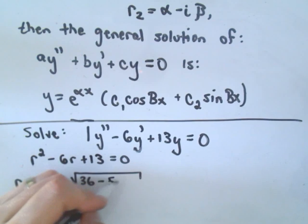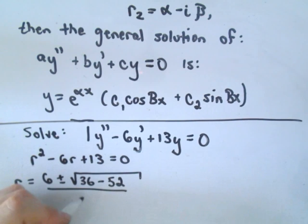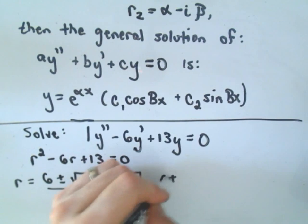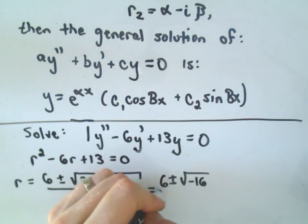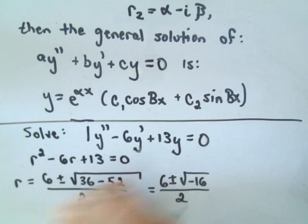4 times 1 times 13 is 52, over 2 times A. If we simplify this down, we'll get 6 ± √(-16). So there's our complex solutions cropping up.